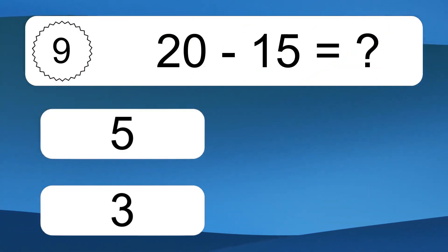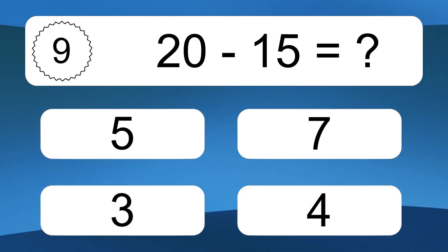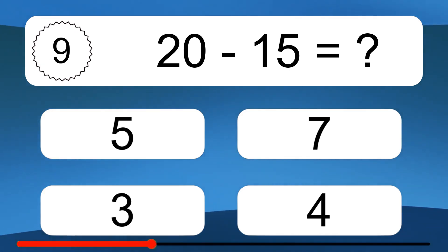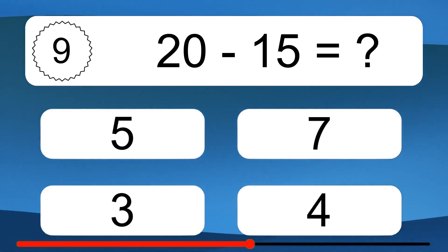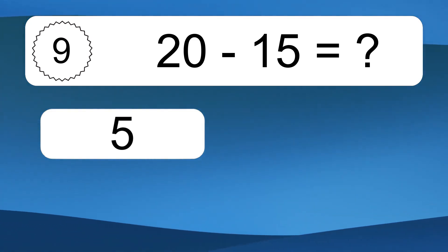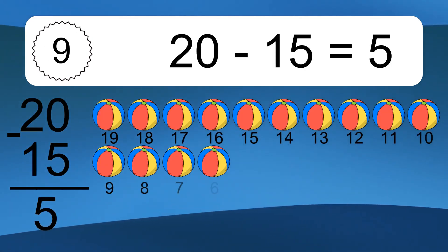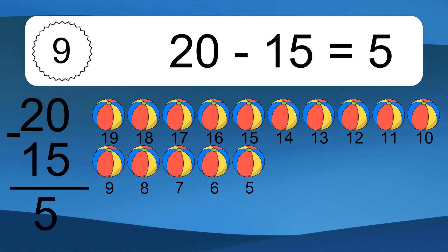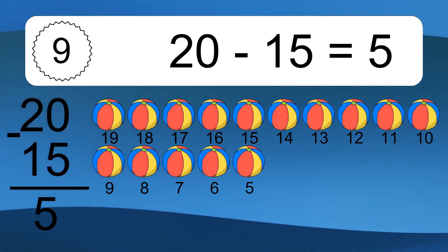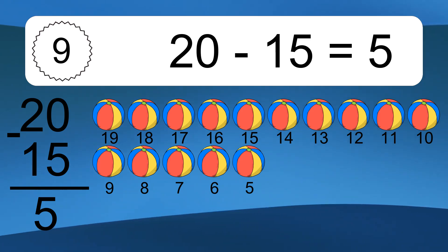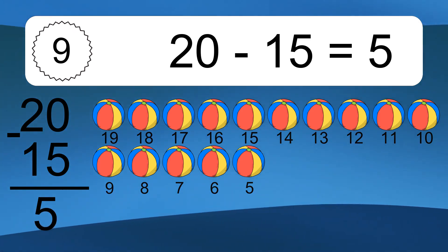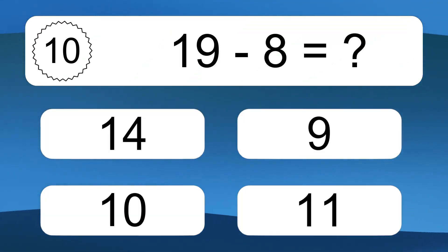20 minus 15 equals what? 20 minus 15 equals 5. Let's count it: 19, 18, 17, 16, 15, 14, 13, 12, 11, 10, 9, 8, 7, 6, 5.